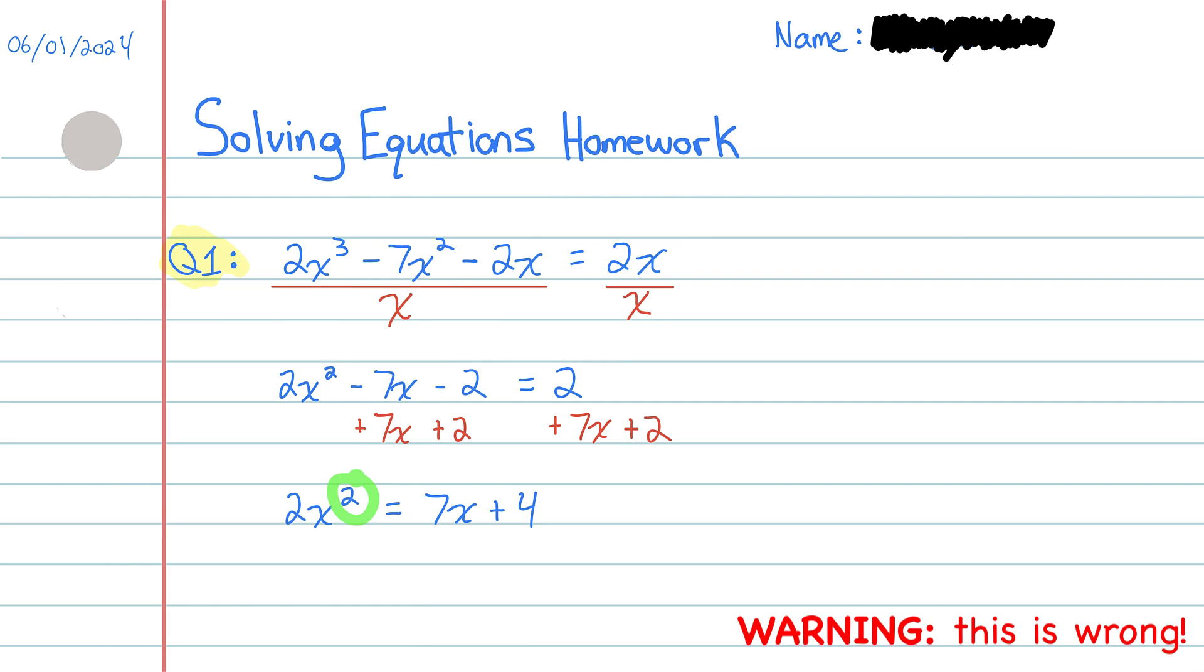Now I want to take care of this square that's on the x. I want to get rid of it. Well, I can do the inverse of squaring, which is square rooting. So I'll square root that 2x², and I'll remember to do that to both sides of the equation to keep it balanced. On the left side, the square root and the squared cancel out, so I just have 2x left. On the right side, I have to square root both the 7x and the 4. Square root of 7x, I can't simplify that, plus the square root of 4 is 2.